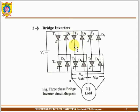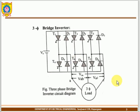The switching sequence continues: T3 fires, after 60 degrees T4, after 60 degrees T5, after 60 degrees T6. This is the switching sequence. The delay angle is 60 degrees for the inverter, whereas in the three-phase rectifier the delay angle is 30 degrees.